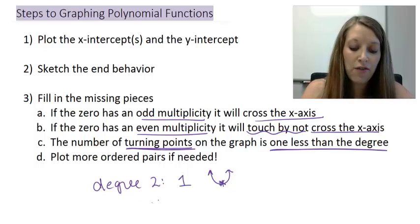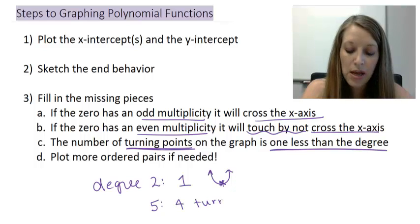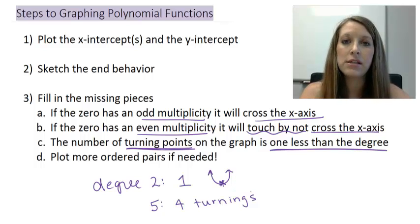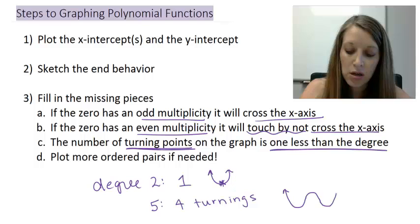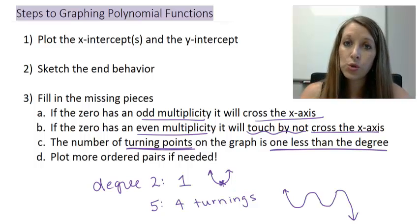If it's a degree five polynomial, then it can have four turning points, meaning your graph can turn—it can, not necessarily that it will—it can switch directions four different times. So if it's starting here, it'll switch directions once, twice, three times, and then a fourth time. So it will switch directions one less than degree.